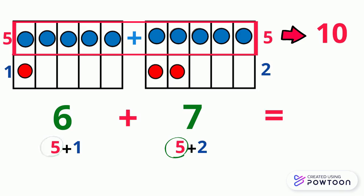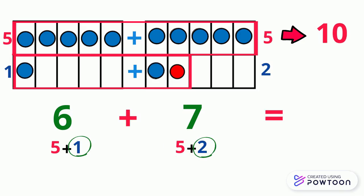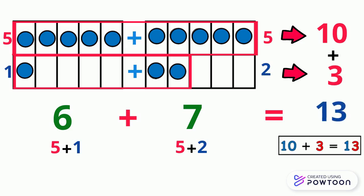Now we will add 1 and 2. 1 plus 2 equals 3. 10 plus 3 equals 13. So 6 plus 7 equals 13.